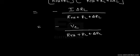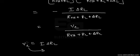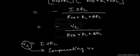If we put it as minus VC divided by RTH plus RL plus delta RL, then we can prove this theorem. This particular voltage VC, given by I multiplied by delta RL, is known as the compensating voltage, and that is where this theorem derives its name — the compensation theorem.